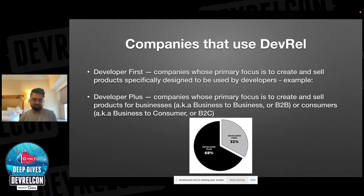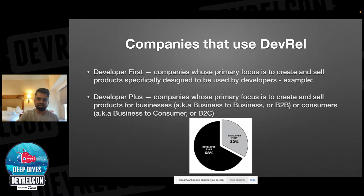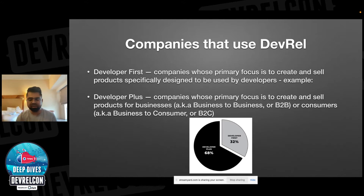If you're here, you're already a developer relations leader. You already know that there's a developer-first company and there's a developer-plus company. Developer-first companies are those whose primary focus is to create and sell products specifically for developers — things like Twilio, Confluence, or Jira. Developer-plus is where developers use something like an SDK or a back-end service to create something for a broader audience — developers act as one of the bridges to reach the end users.